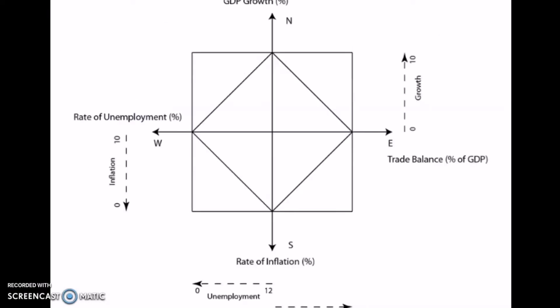Now let's look at the Kaldor's Magic Square. This is not Rubik's cube — it originates from studies by Kaldor and later by the OECD in the 1970s. This square shows four aggregate indicators. In the upper side we have GDP growth.